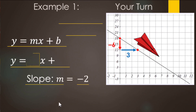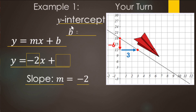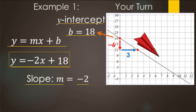Now we're ready to fill in our slope-intercept form. The m is going to be the slope — we already know that's negative two. Next up, find the y-intercept, and that's right there at 18. So b is going to be 18. Remember: if you know the y-intercept, use slope-intercept form — just find the slope and you're good to go. So y equals negative two x plus 18.